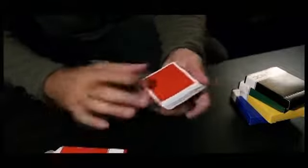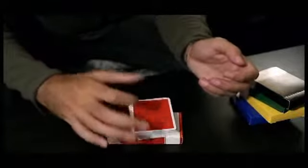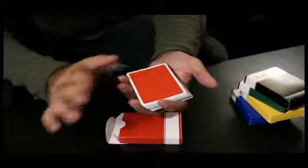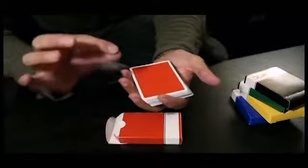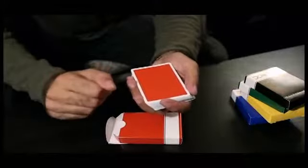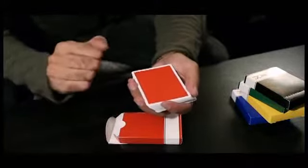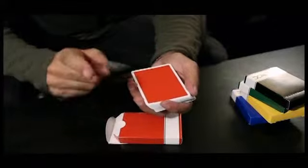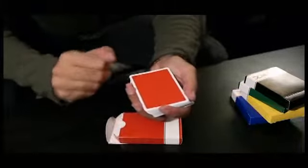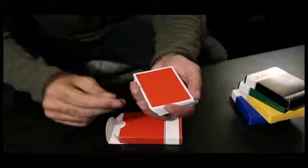Now you're going to tell them to shuffle up the deck. They do so. Place the deck on the table. And now what we're going to do is read the marking system for the suits. Now we're going to do it, like I said, in three tiers. So you're going to say this to the spectator.